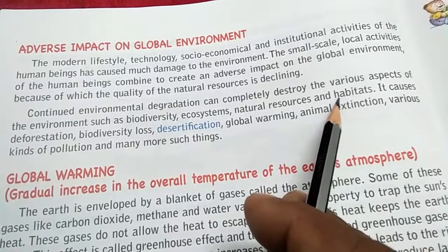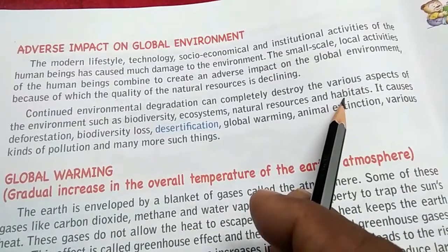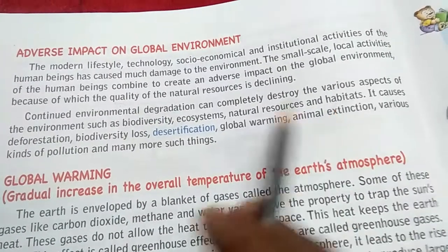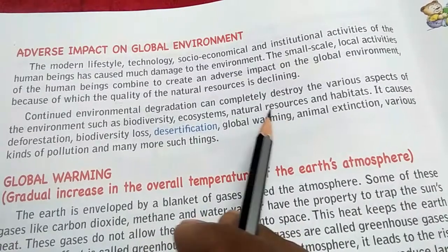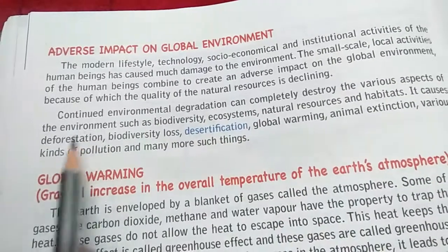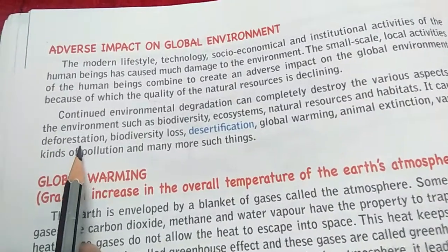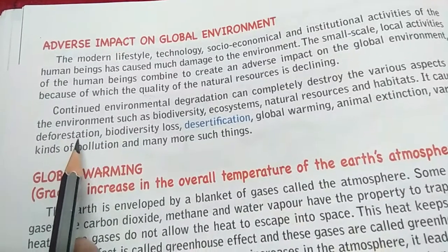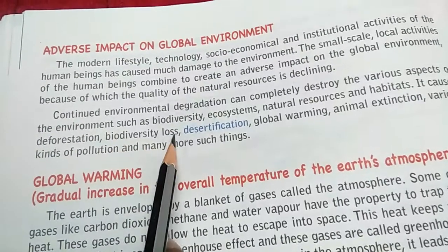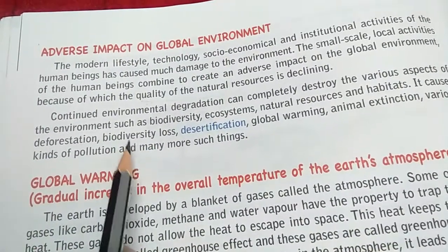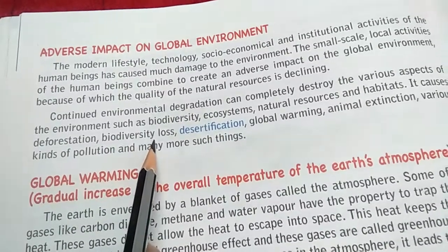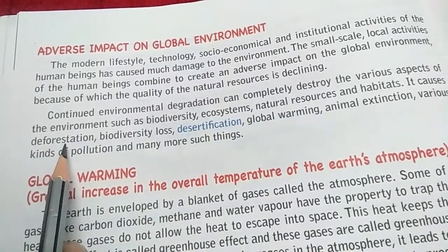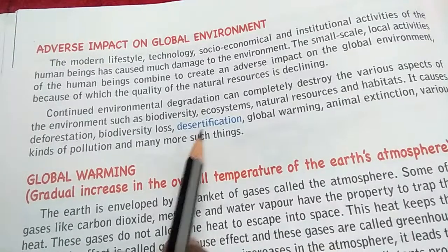Habitat means where animals live — for example, forest. The forest area is decreasing, so wild animals' habitat is being destroyed. We are exploiting natural resources through more mining and more cutting of trees, which causes deforestation. Deforestation means cutting more trees for timber or other purposes. This leads to diversity loss — biodiversity loss — as many animals and birds are dying because we are destroying their habitat. The result is desertification: since trees are cut, the desert area is increasing and the land is turning barren.